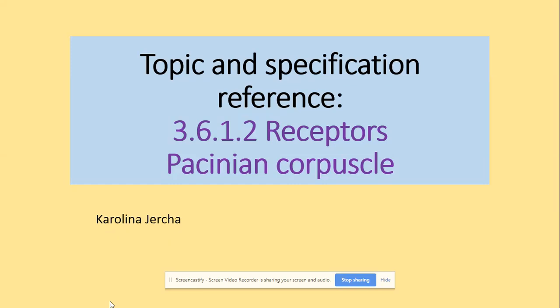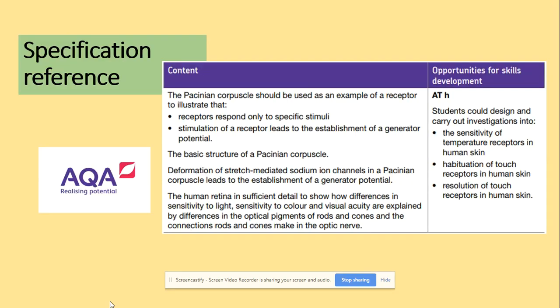Hi guys! Welcome to Receptors: Pacinian Corpuscle. In terms of the specification, you need to know that the Pacinian Corpuscle could be used as an example of a receptor to illustrate that receptors respond only to specific stimuli.